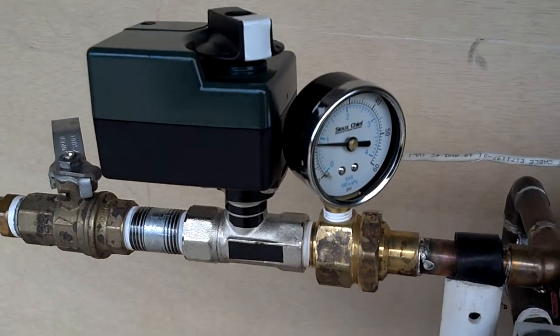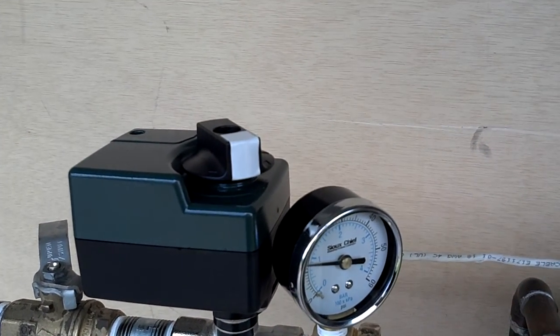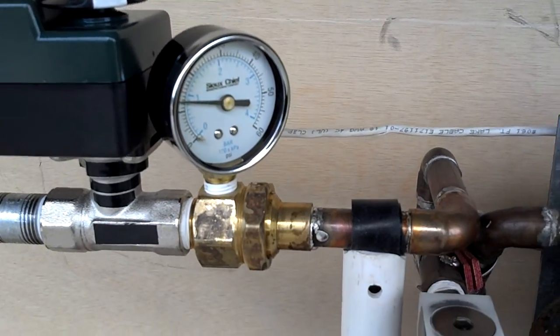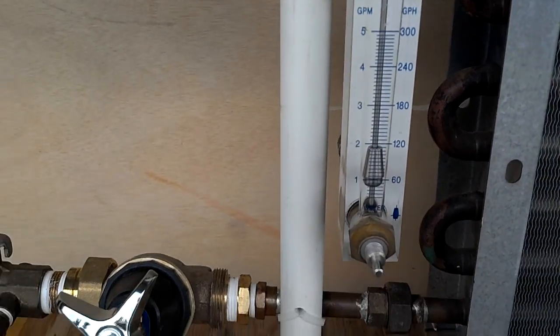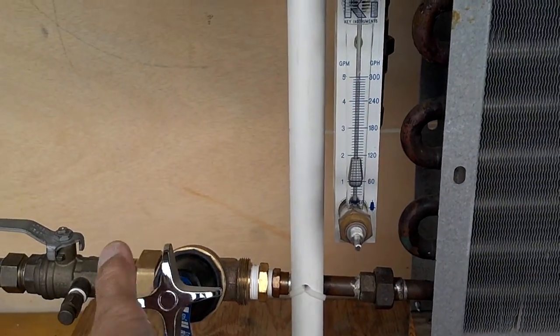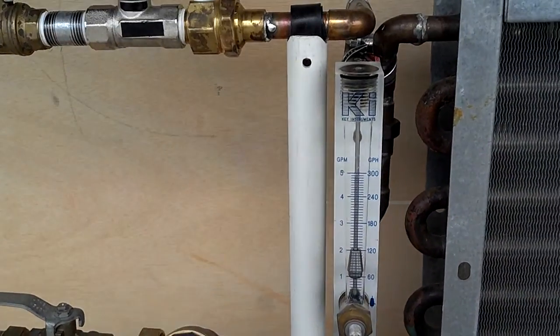The temperature control valve is now at about 50% throttle and everything looks pretty stable. Now let's simulate what happens in the system when the pressures rise.